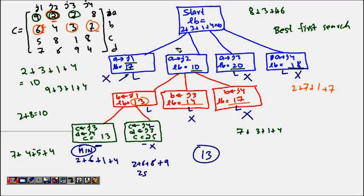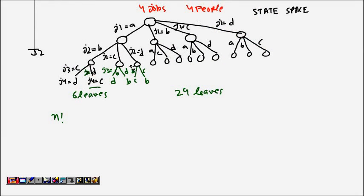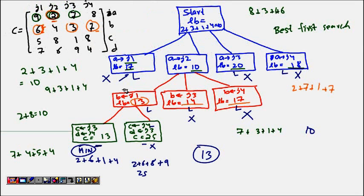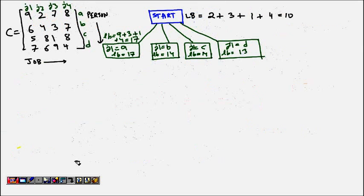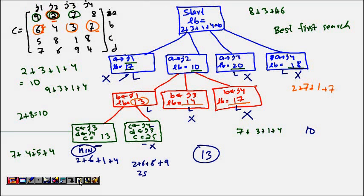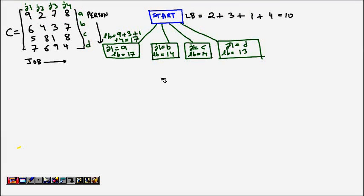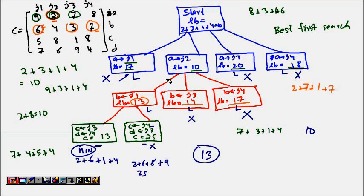We only explored 10 nodes compared to the much larger permutation tree. This demonstrates how branch and bound saves a significant number of searches. The implementation maintains a priority queue of all live nodes, always extracting the node with the lowest lower bound to expand next. The problem can also be structured by assigning persons to jobs level by level instead.